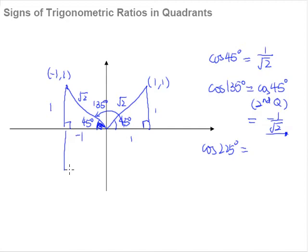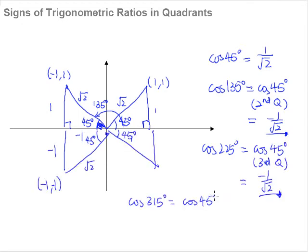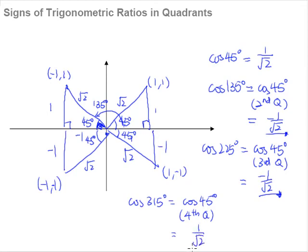Finally, we want to find cosine 315 degrees. We know that 315 degrees is the same as the 45-degree acute angle in the fourth quadrant. This point here will be (1, -1), making the y value negative, while the hypotenuse is still square root 2 and the x value is positive 1. So: adjacent side, which is 1, over the hypotenuse side, which is square root 2. This gives us a positive 1 over square root 2.